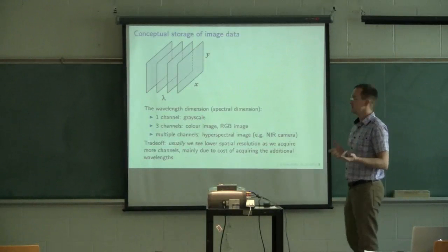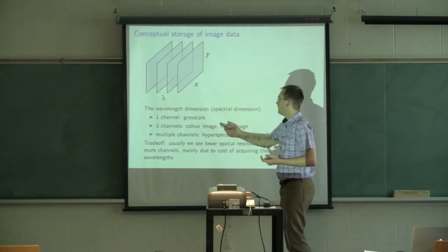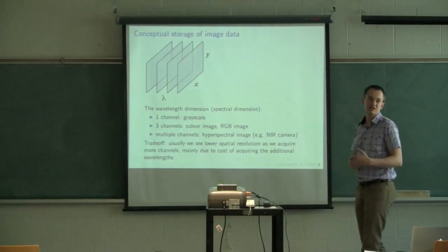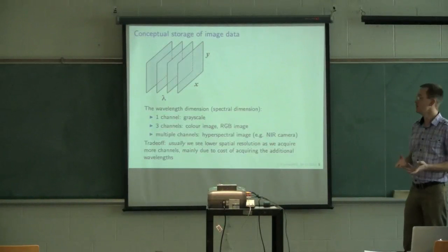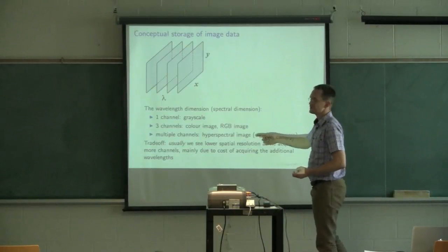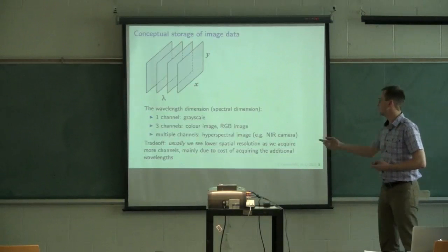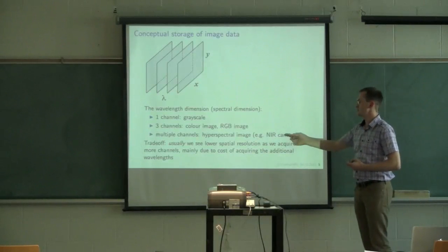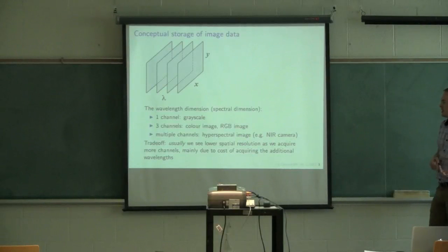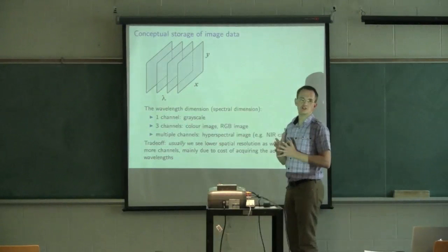An image with a single channel is called a grayscale image. Images with three channels are usually color images, shown on a computer screen as RGB. If you've got multiple channels, those are called hyperspectral or multispectral images, typically from more expensive cameras like near-infrared cameras. There's a trade-off: as we go to more and more wavelengths, we usually reduce the spatial resolution.